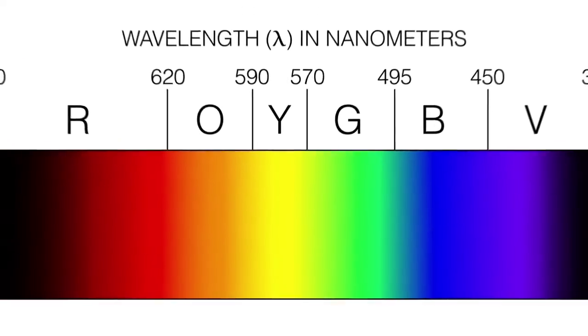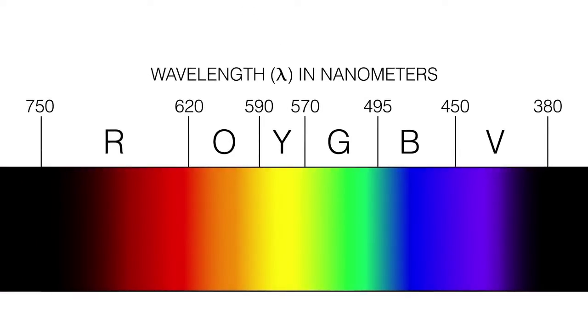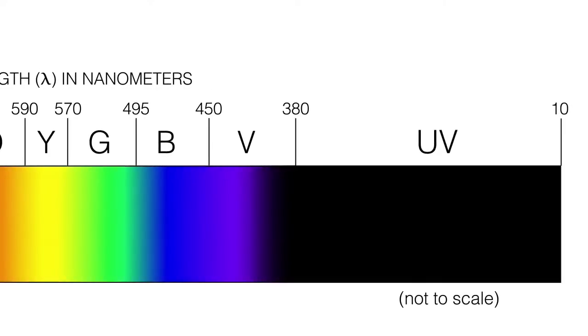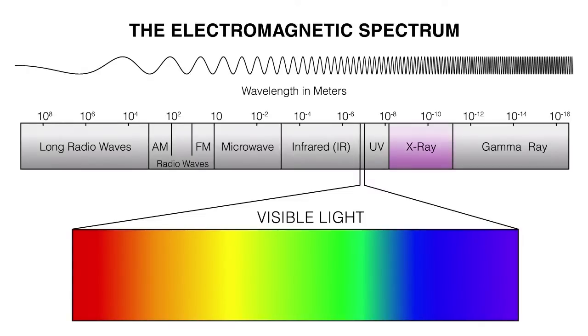Unlike water waves, the faster an electromagnetic wave oscillates — the higher the frequency — the more energy the wave has. In the visible spectrum, we see these differences in frequency as color. Red has the longest wavelength and lowest energy of visible light. Violet is the highest frequency, with the highest energy of visible light. Just above violet is ultraviolet light, which has even more energy — and this is where electromagnetic waves start to become harmful. Moving up the scale you get into x-rays and gamma rays, which are even more harmful.